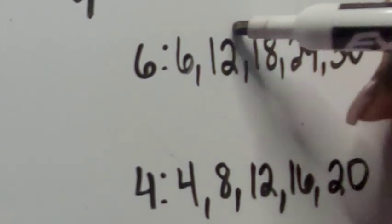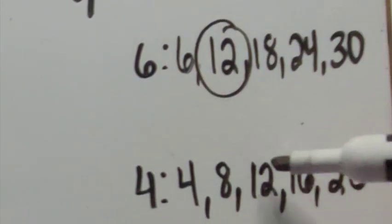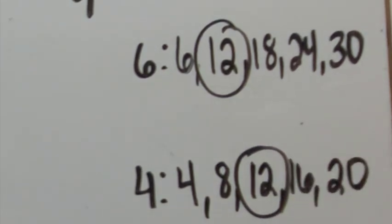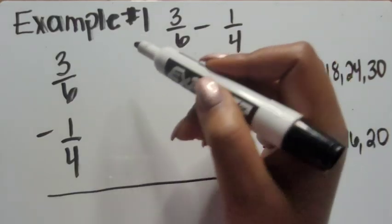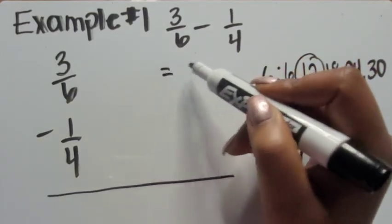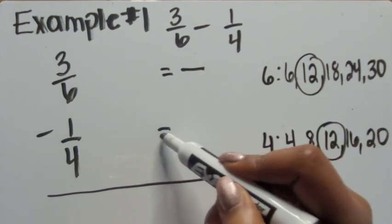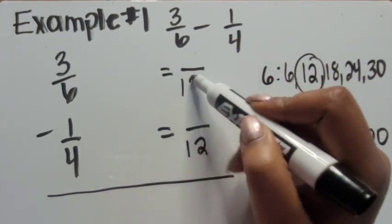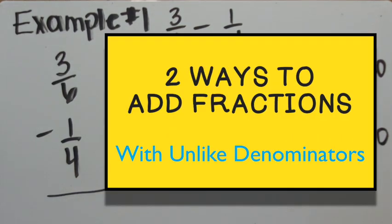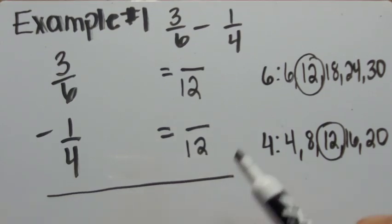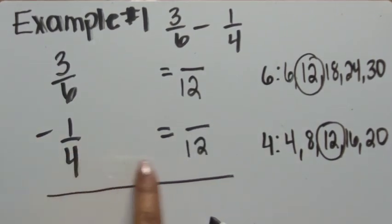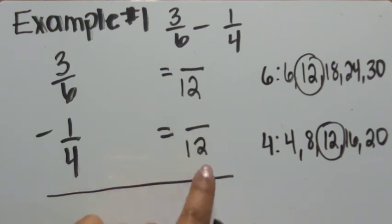Yes, they both have twelve in common. So we can use twelve as a common denominator. We're going to write that our new equivalent fraction for both will have a denominator of twelve, very similar to what we did when adding fractions with unlike denominators. Now looking at our new denominators, let's think about one-fourth.